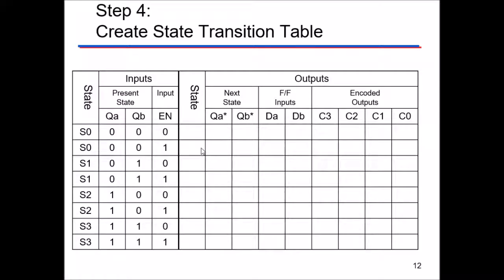Now let's create the state transition table from the state graph. If I'm in state zero, QA and QB are both zero. State one is 0,1; state two is 1,0; state three is 1,1 — these are just binary representations of each state. The next state depends on whether enable is on: in state zero with enable off, stay in state zero; with enable on, go to state one. State one: enable off stays, enable on goes to state two. State two: enable off stays, enable on goes to state three. State three with enable on goes back to state zero.